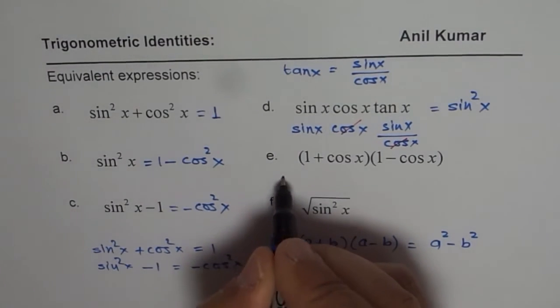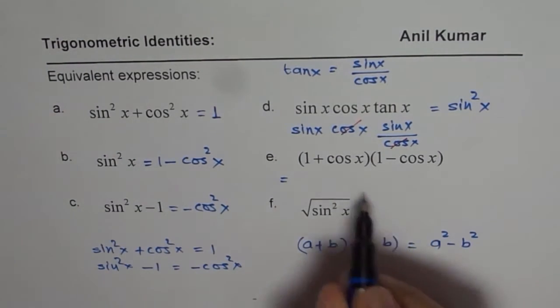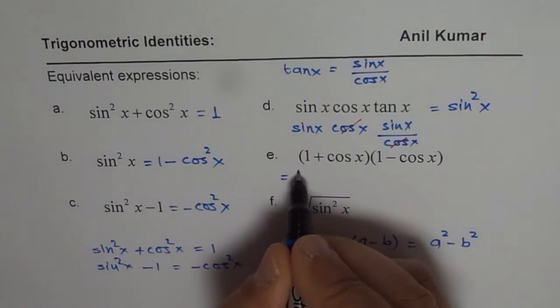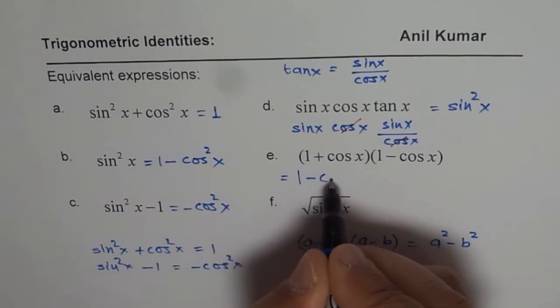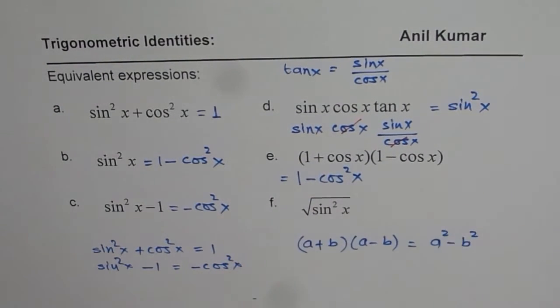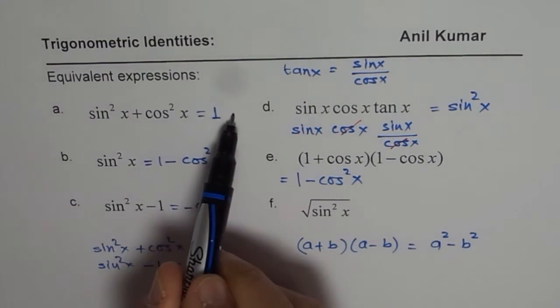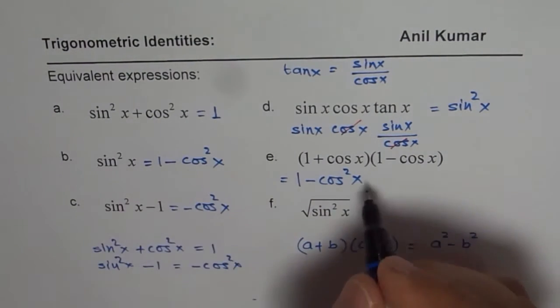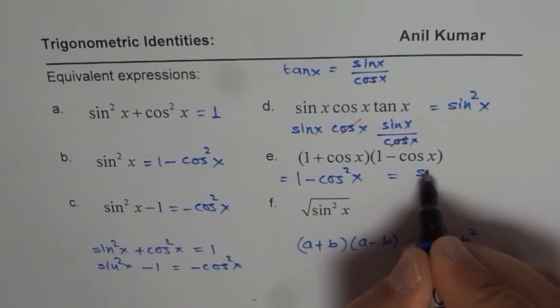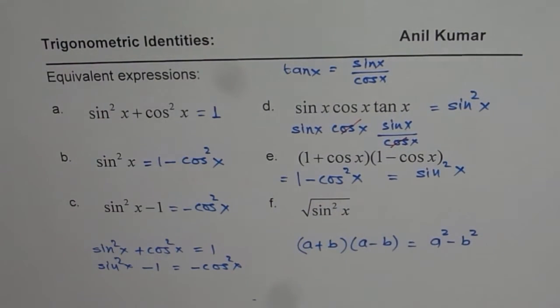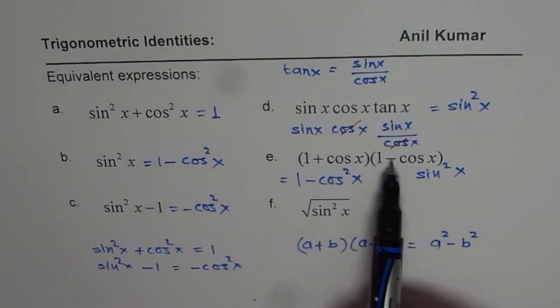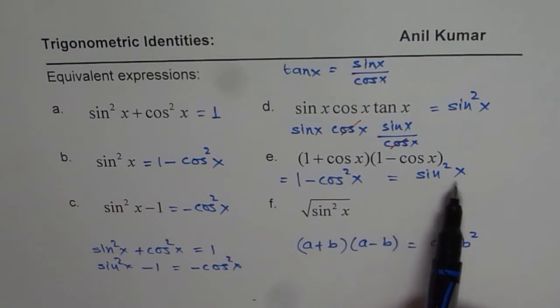So you could write this as 1 is A, cos x is b. 1 square is 1 minus cos square x. Do you see that? And what is 1 minus cos square x? If I take cos square x on this side, I am left with sine square x. So we get sine square x. This is what it is. So the given expression could be written as sine square x. Well, you see most of the expressions, you have sine square x involved.